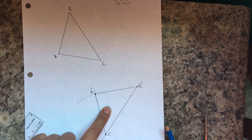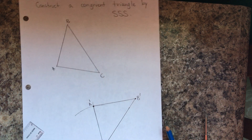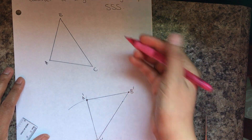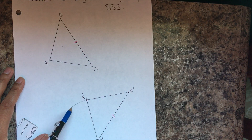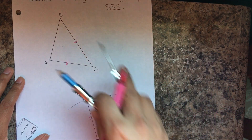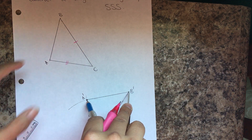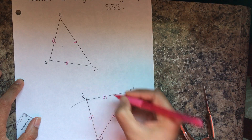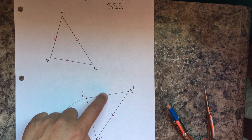That's the congruent triangle to ABC: A prime B prime C prime. We used side-side-side. First we measured BC, so those sides are congruent; then I used AC to find the second side; and finally I measured BA so that I would know where those two sides intersect to make point A. Only the three sides are marked because that's what we used — that's side-side-side.